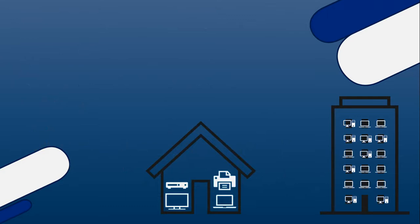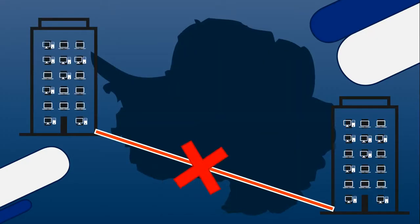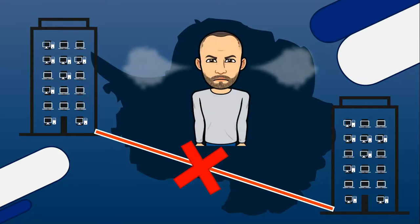With smaller networks like LANs and HANs, you normally own the land or building the network is created upon, so you have every right to lay cables or install devices. The problem arises when buildings are stretched across a city or country — you aren't allowed to install cables in the ground from one building, going through your neighbor's property, through the road, through other buildings to reach your branch. You are not legally allowed to do that, and thankfully so.